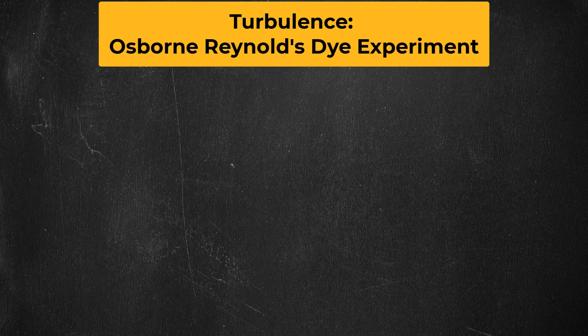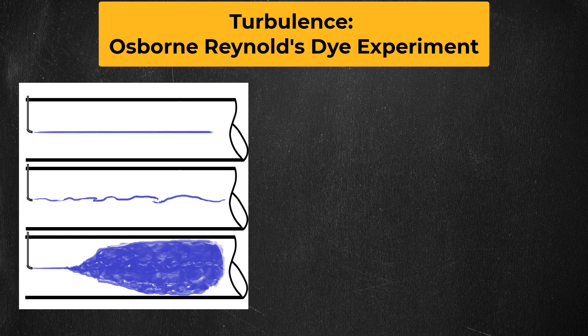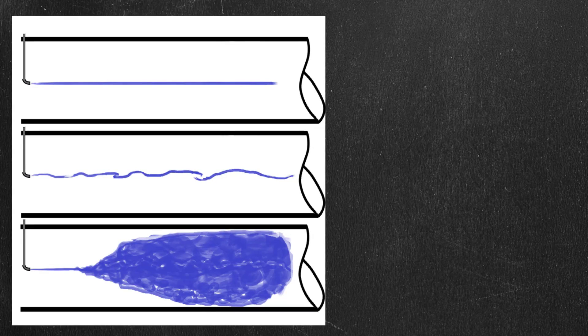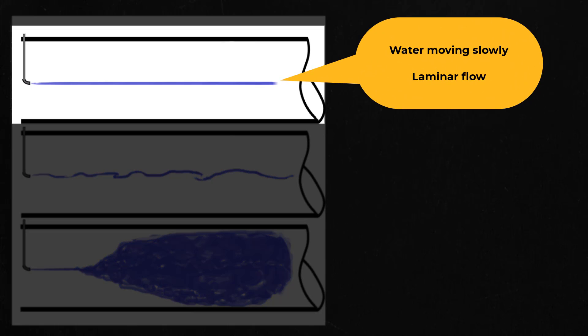Next I want to talk about turbulence and this illustration shows the concept of the famous dye trace experiment of Osborne Reynolds. In the experiment, dye was injected into a pipe with water flowing through it. If the water was moving slowly, the dye just flowed along with the water. This is known as laminar flow.